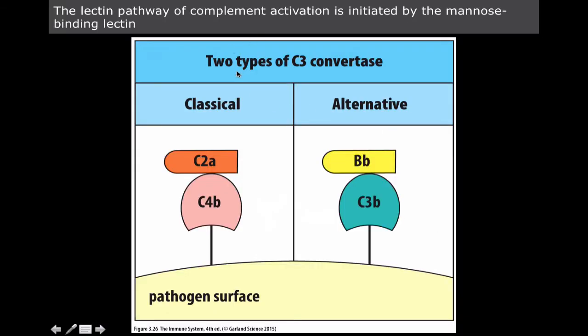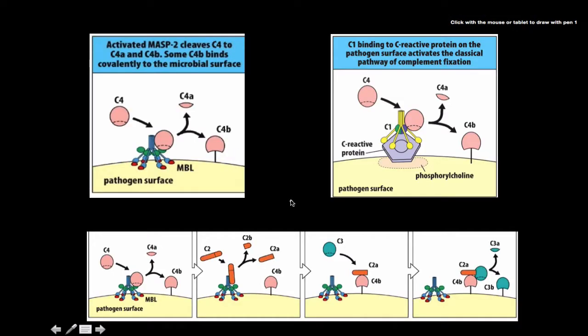I just really wanted to diagram this picture because I think it points out how similar they are. Yeah, so the lectin, both the lectin pathway and complement pathway have the same type of C3 convertase.